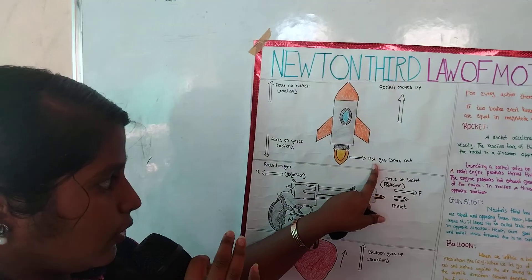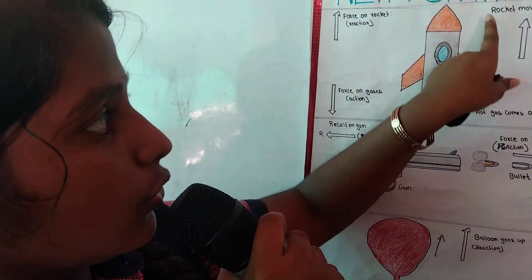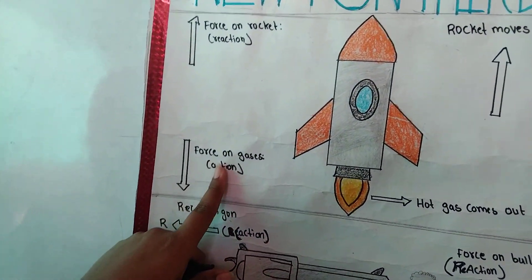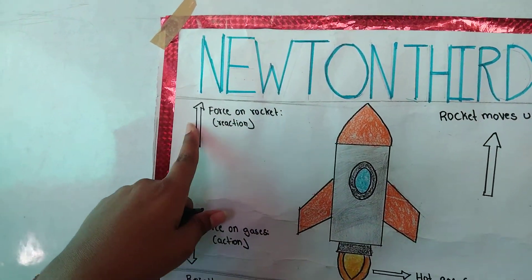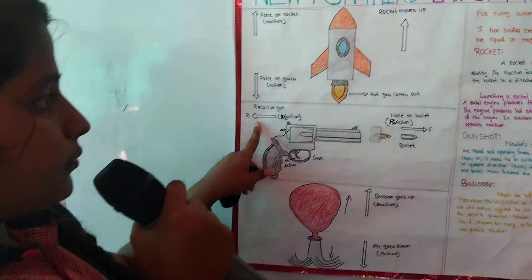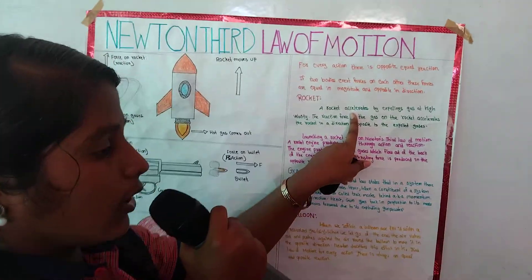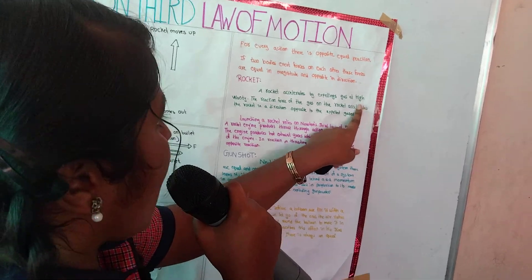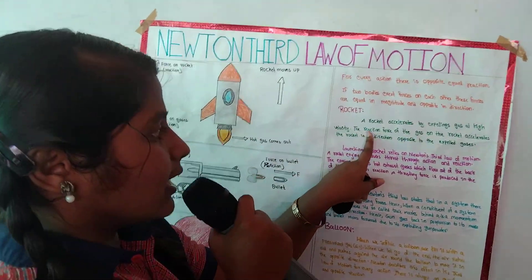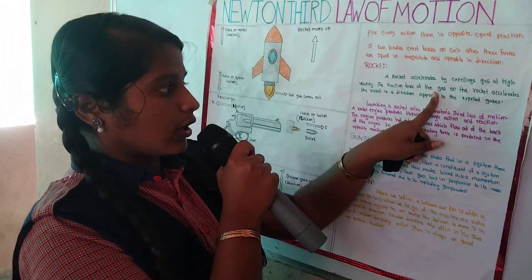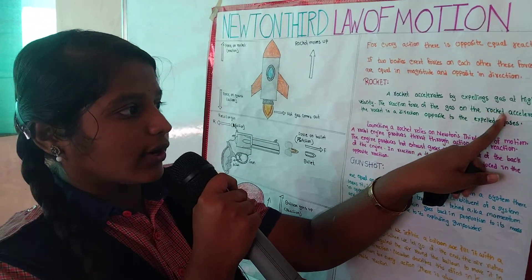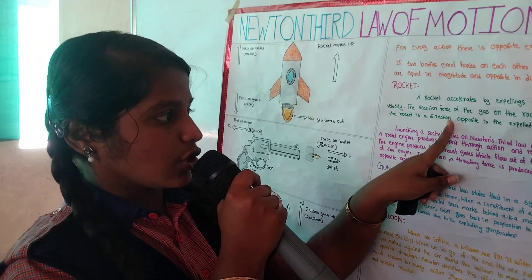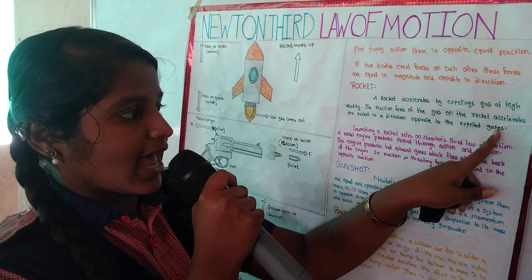Rocket example: hot gas comes out, rocket moves up. The force on the gas is the action, and the force on the rocket is the reaction. A rocket accelerates by expelling gas at a high velocity. The reaction force of the gas on the rocket acts in the direction opposite to the expelled gases.